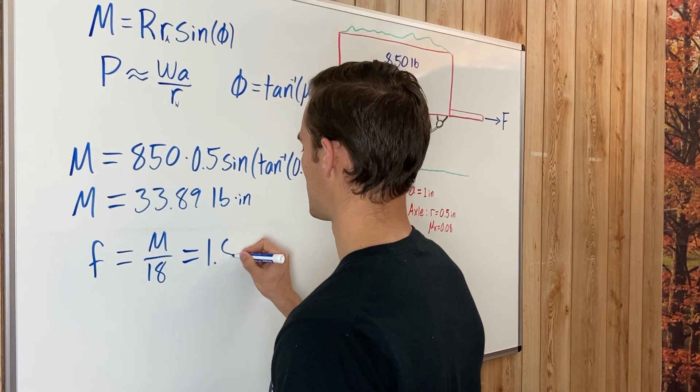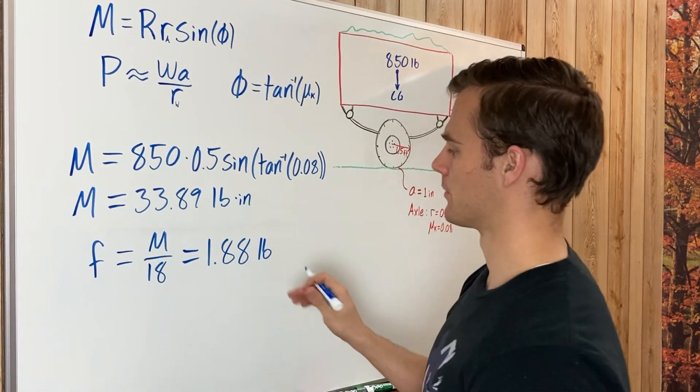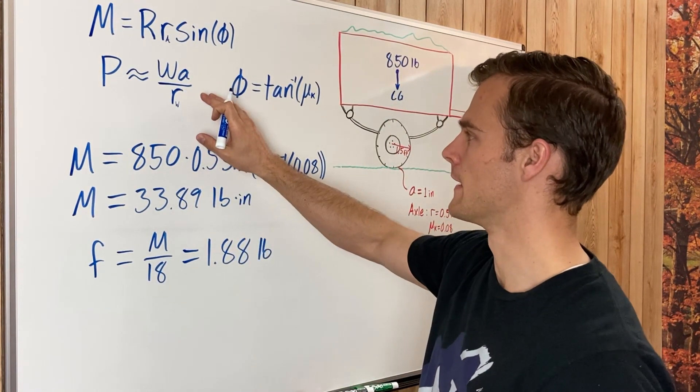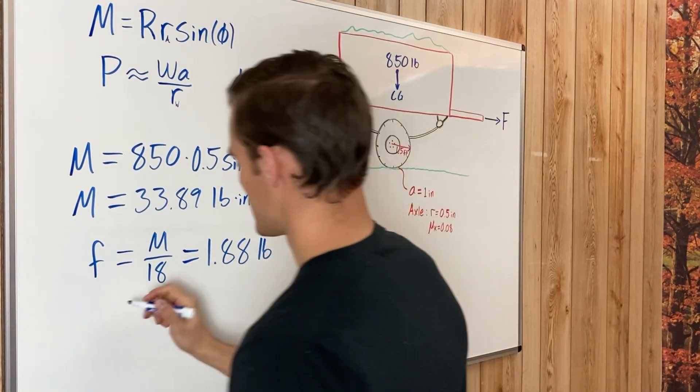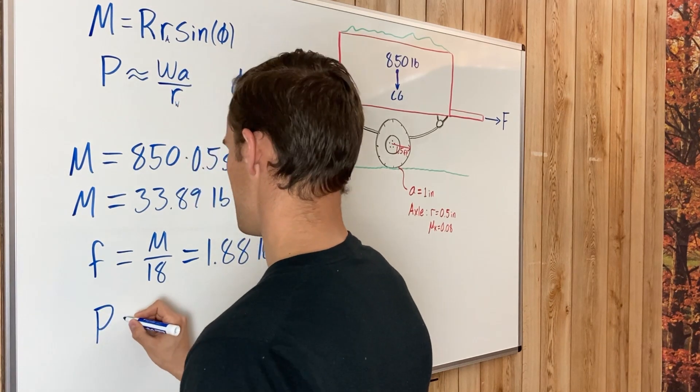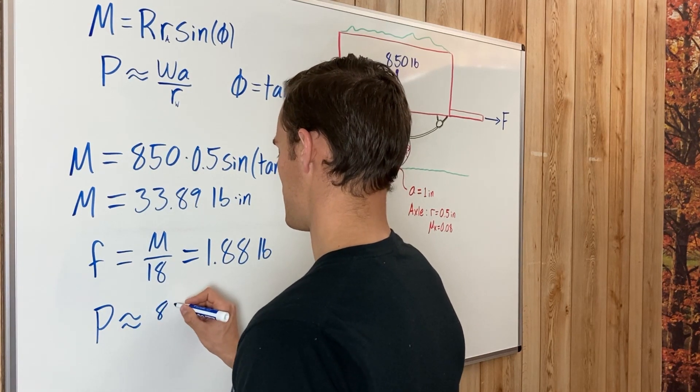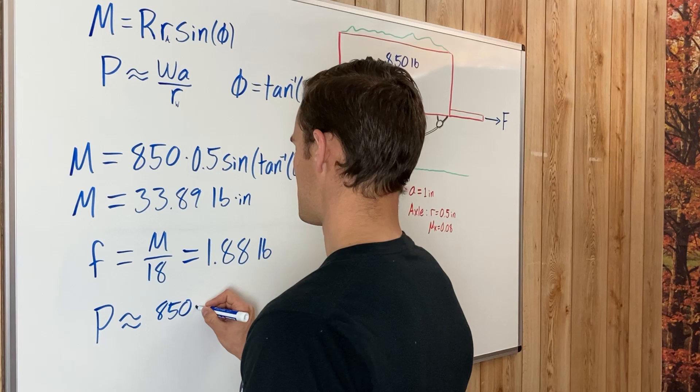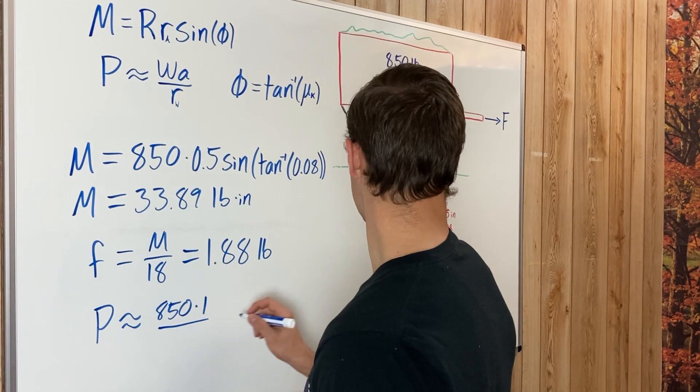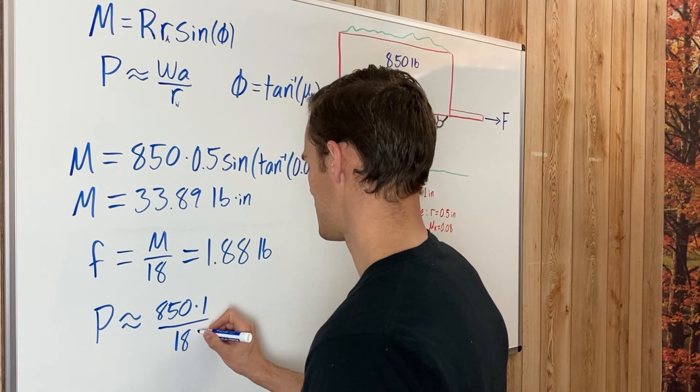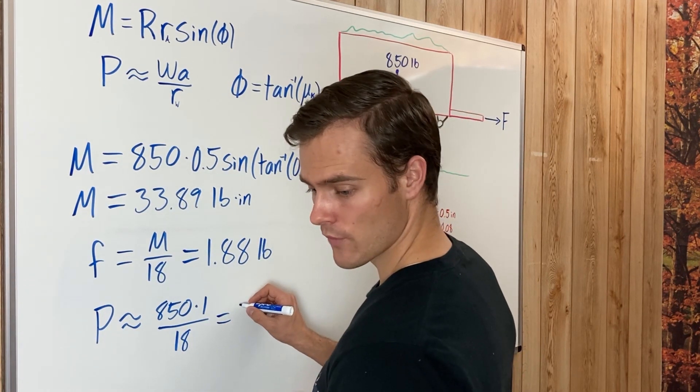Now we're going to find the force P needed to overcome the rolling resistance. So P approximately equals W, which is 850, times by a, which is 1 inch, divided by r, which is the radius of the wheel, which we said was 18 inches.